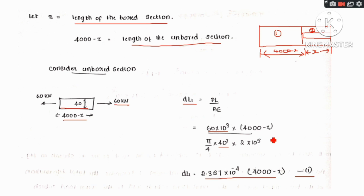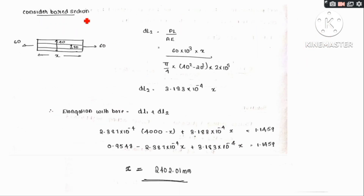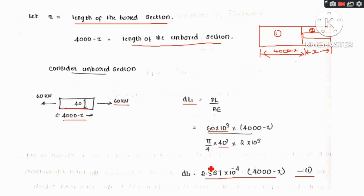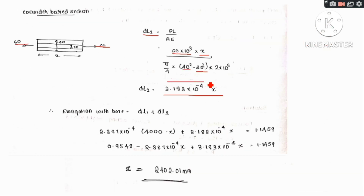For the bored section of length x, we consider it as a hollow cross-section with external diameter 40 mm and internal diameter 20 mm. The load is 60 kN. Delta L2 = PL / (A_net × E), where A_net = π/4 × (40² - 20²). This is equation 2 for the bored section.